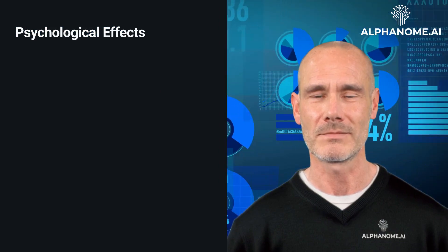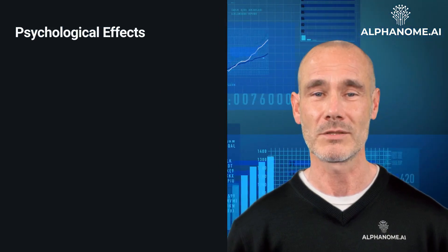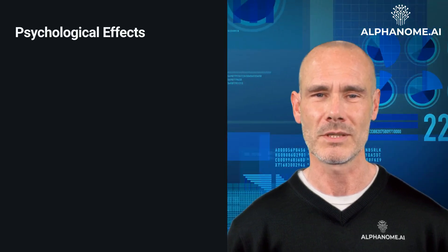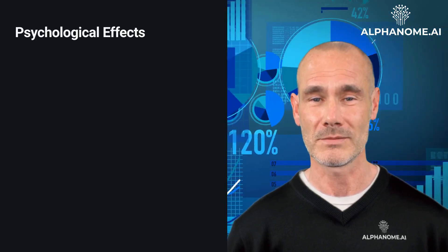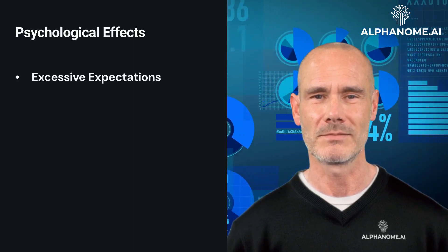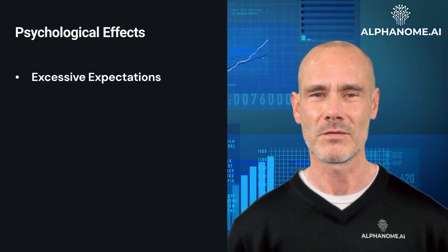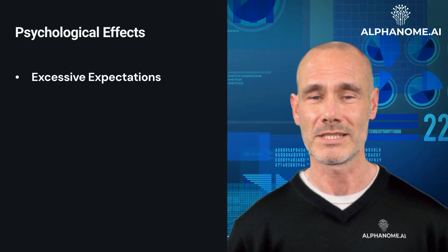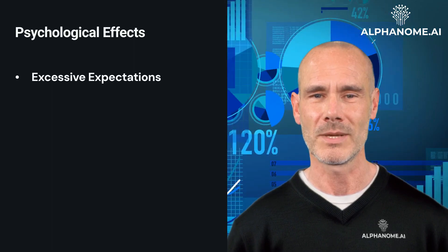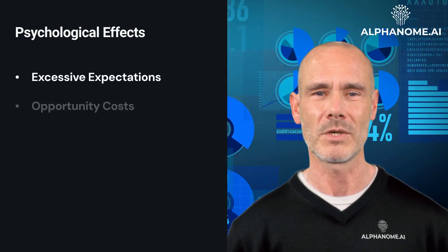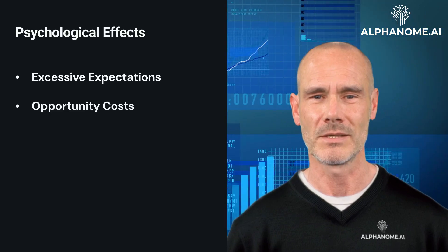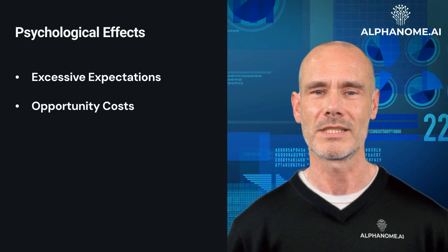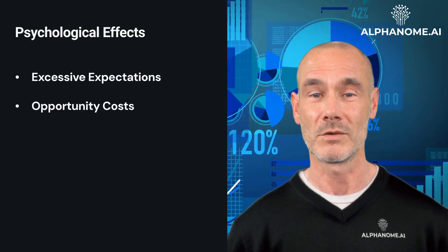Psychological Effects: Beyond the practical challenges of sorting through too many options, choice overload takes a psychological toll. Some of the effects include excessive expectations — with a vast number of alternatives, people develop unrealistically high expectations that the perfect option exists, clouding their ability to make a satisfactory choice. Opportunity costs — having to forego a large number of alternatives amplifies feelings of loss over missed opportunities and potential regret over the option chosen.